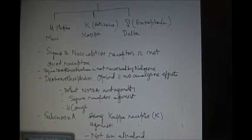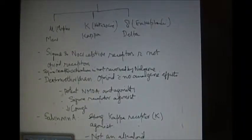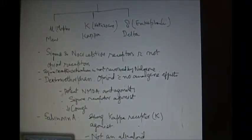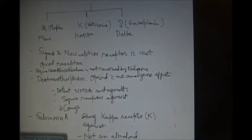These drugs are not receptor specific. For example, morphine mainly acts on mu receptors, but it also acts on kappa and delta receptors.